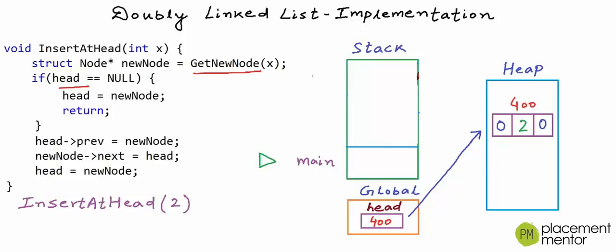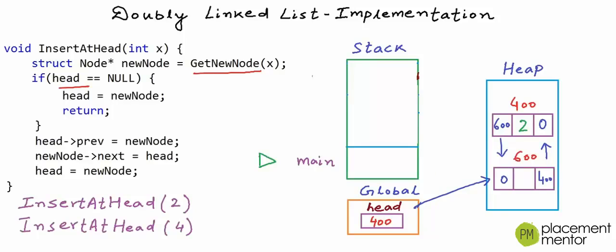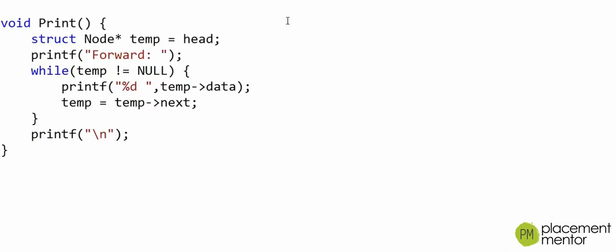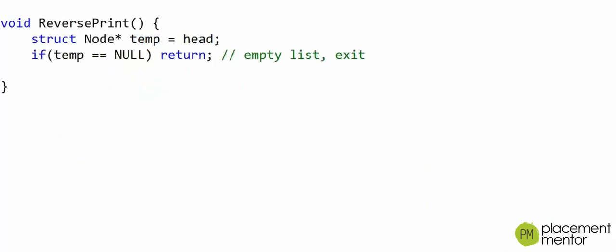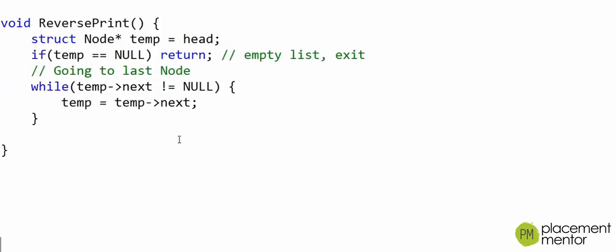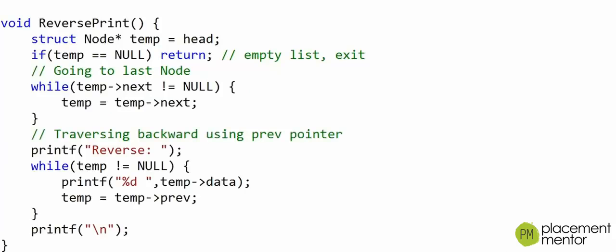I hope all of this is making sense. With another call to insertAtHead, when everything finishes and control returns to main, we can have a picture with a node at address 600. The right cell stores the address of the next node and the left cell stores the address of the previous node. The print function will be the same as for a singly linked list — take a temporary pointer to node, initially set to head, and use temp equals temp arrow next to traverse forward while printing. In reverse print, we first go to the end node using the next pointer, then traverse backward using temp equals temp arrow prev, printing data as we go.